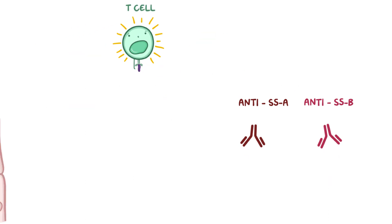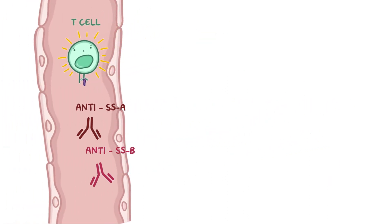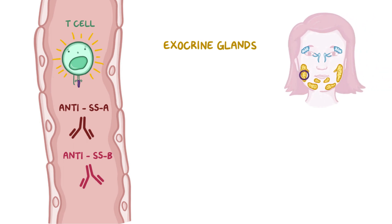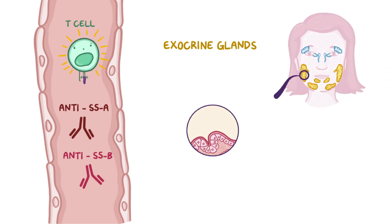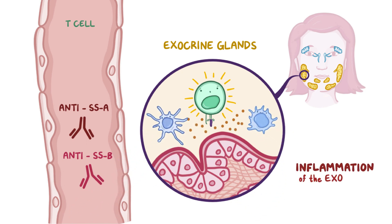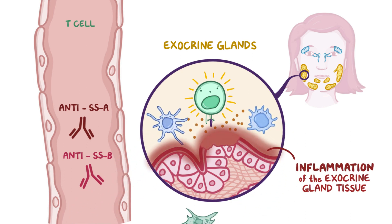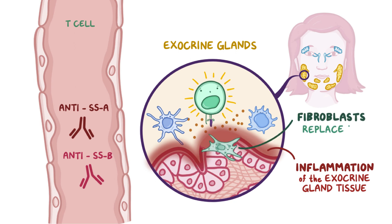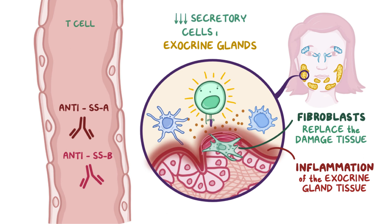Then both T cells and antibodies enter the circulation and reach the exocrine glands, where the T cells secrete cytokines to recruit more immune cells and promote inflammation of the exocrine gland tissue. The cytokines also activate fibroblasts in the tissue, which then produce fibrous tissue that replaces the damaged tissue. The end result is a loss of secretory cells in the glands.